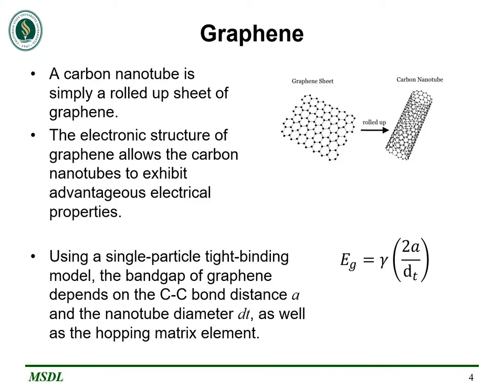A carbon nanotube is simply a rolled-up sheet of graphene, which is a two-dimensional hexagonal crystal lattice of carbon atoms. The fact that this carbon nanotube is hollow and has a lack of boundaries is quite advantageous. Using a single-particle tight-binding model, we can model the energy bands of graphene. It turns out that the bandgap energy depends on the bond distance between carbon atoms, A, and the nanotube diameter, dt. It also mathematically depends on gamma, the hopping matrix element.